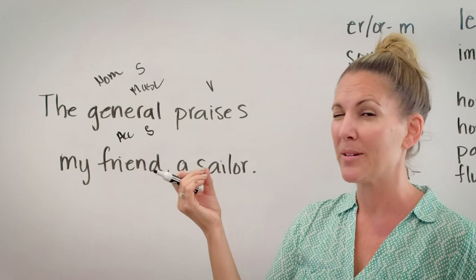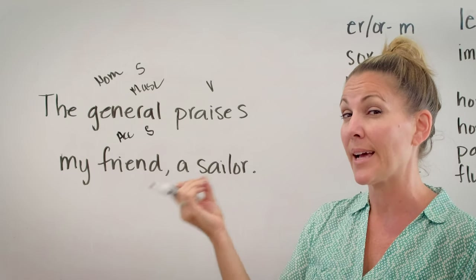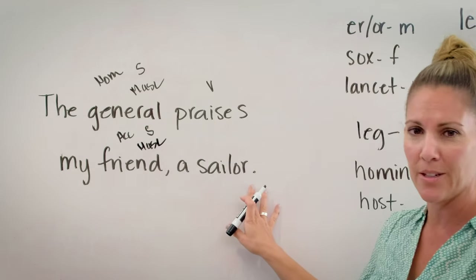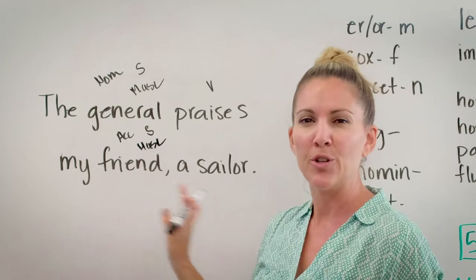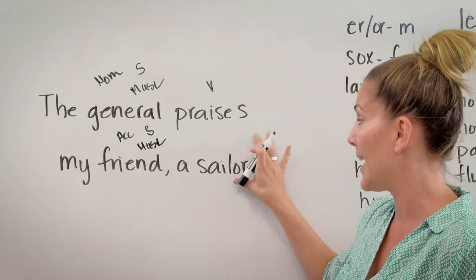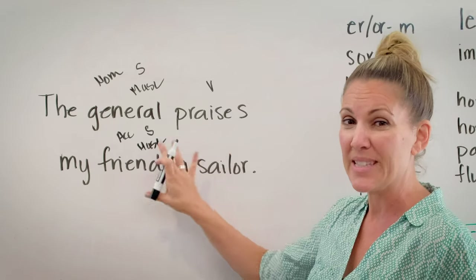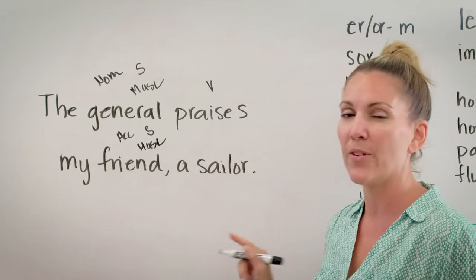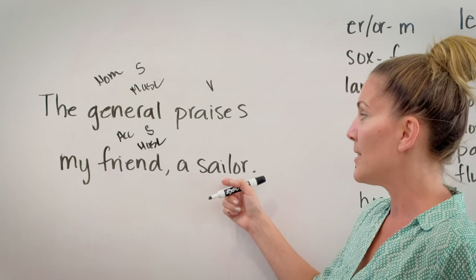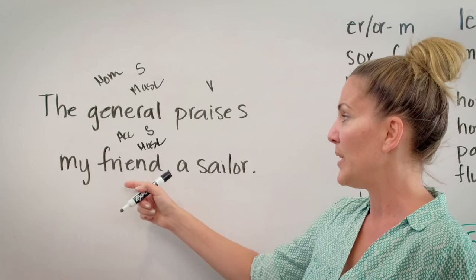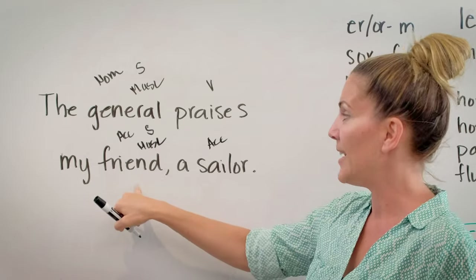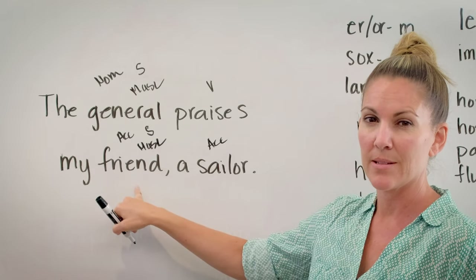The word 'friend' belongs to the second declension, and it is masculine. What about 'sailor'? The sailor is just telling you more about my friend — who my friend is. So 'sailor' is an appositive. This appositive would be in the accusative case because it is identifying a noun that's in the accusative case.